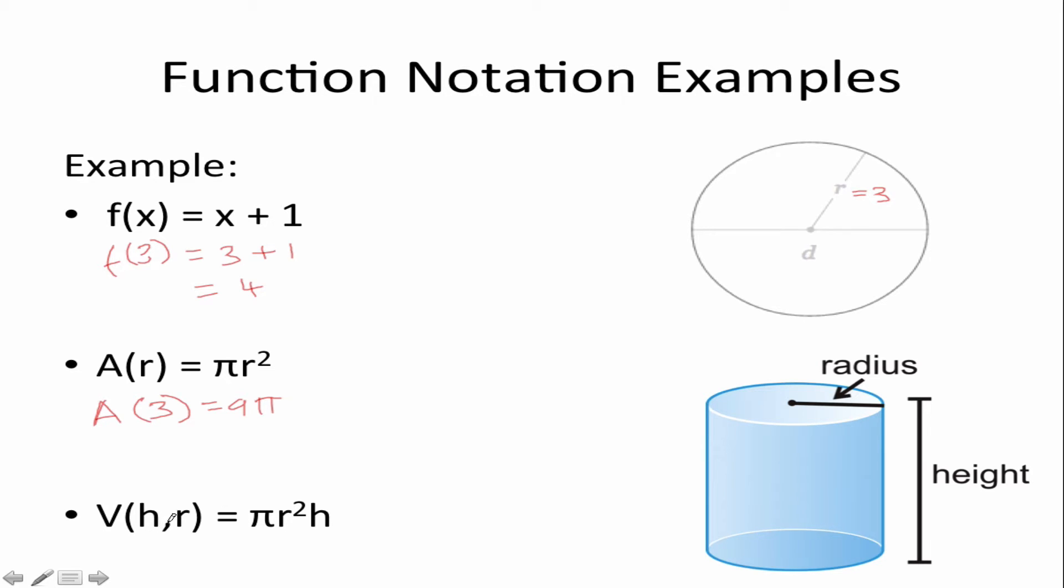A function doesn't have to have only one variable. You can have functions with more than one variable such as this function of volume, volume of a cylinder where it is both a function of height of the cylinder and its radius. I'm not going to give an example of this at this time but I just wanted to show you you can have more than one inputs at the same time.